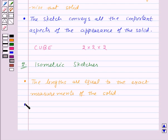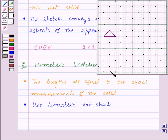To draw isometric sketches, we use isometric dot sheets. An isometric dot sheet is a sheet which divides the paper into small equilateral triangles made up of dots or lines.